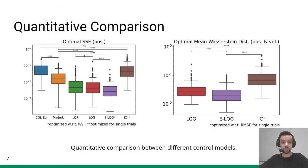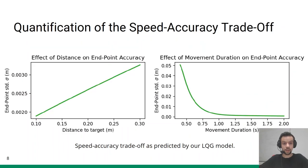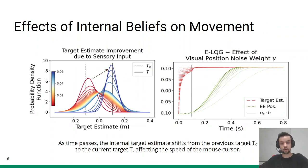To evaluate the quality of the predicted movements, we compared them to real mouse cursor trajectories from the pointing dynamics dataset. Our quantitative analysis showed that LQG and ELQG, an extension including eye saccades in a more sophisticated perception model, significantly outperformed the remaining models in terms of positional error. In addition, our framework provides further insight into the effects of the model parameters. For example, we can quantify the speed-accuracy trade-off by comparing the endpoint accuracy for different distances and movement durations. We can also predict how the user's internal estimate of the current target position changes over time and how this affects the cursor movement.